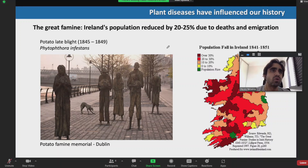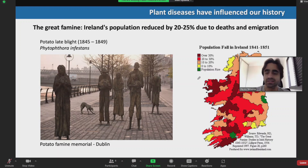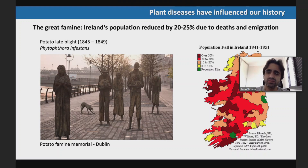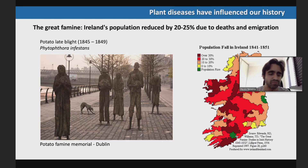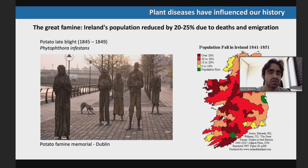So many people died or immigrated to other countries. This map on the right side shows the population fall in different areas of Ireland during this period — the more red in this figure, the higher the population fall. This was so important for their history that they built a memorial in Dublin to remember and acknowledge what happened. This is just one example of how plant disease can change the course of our civilization and our history.